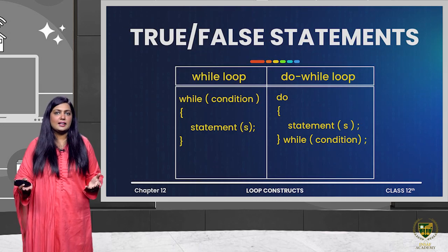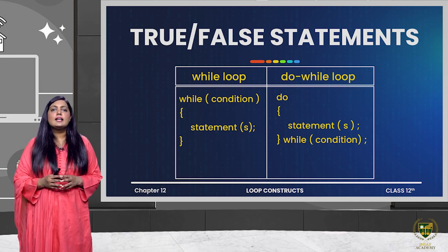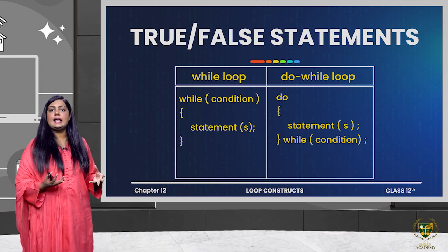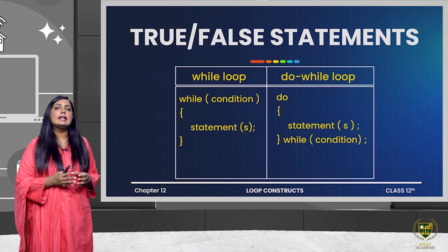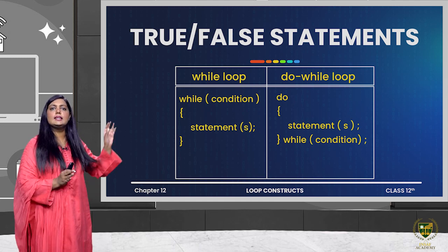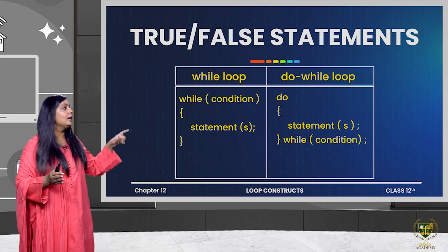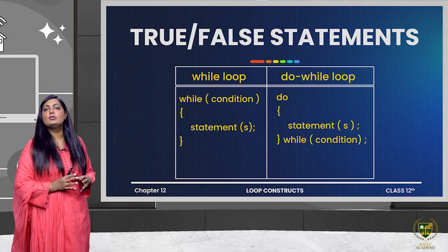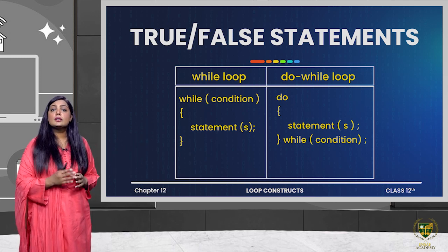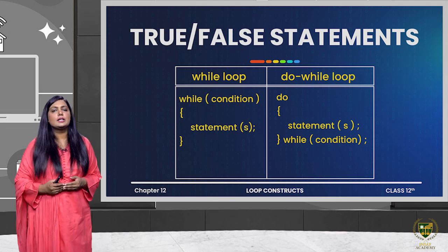This statement is clearly false because we know that do-while loop and while loop have clear differences — otherwise there would be no need to make two different loops. The main difference is the condition check: looking at the syntax, while checks the condition first and then executes the program body if the condition is true, otherwise it will not execute.